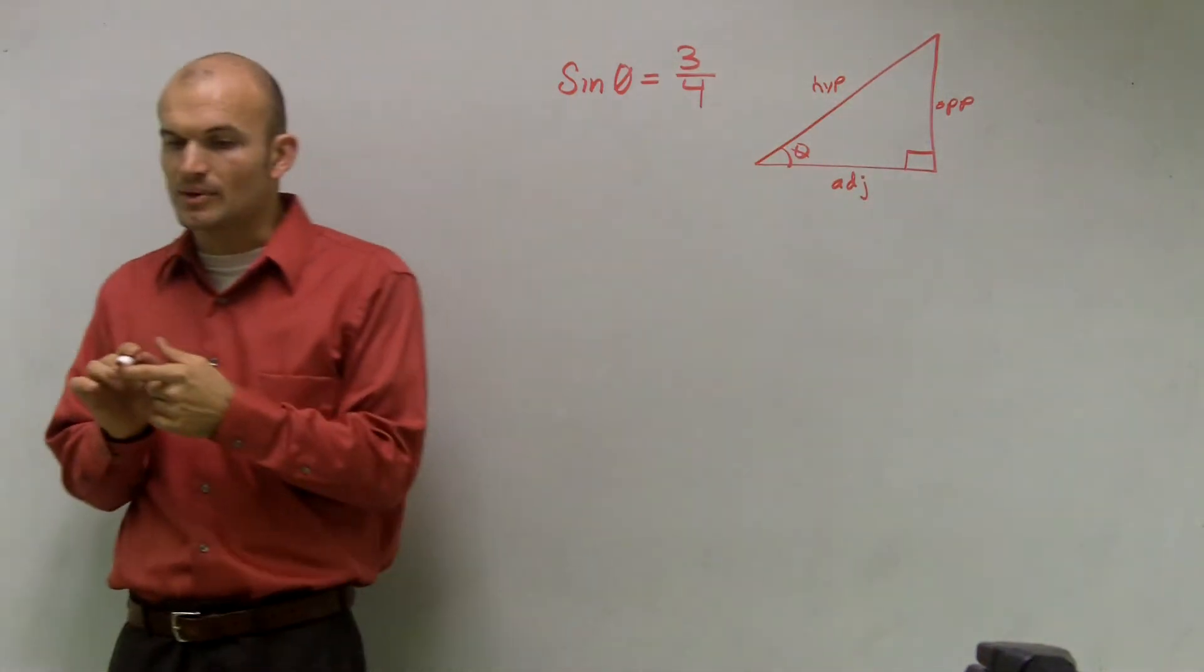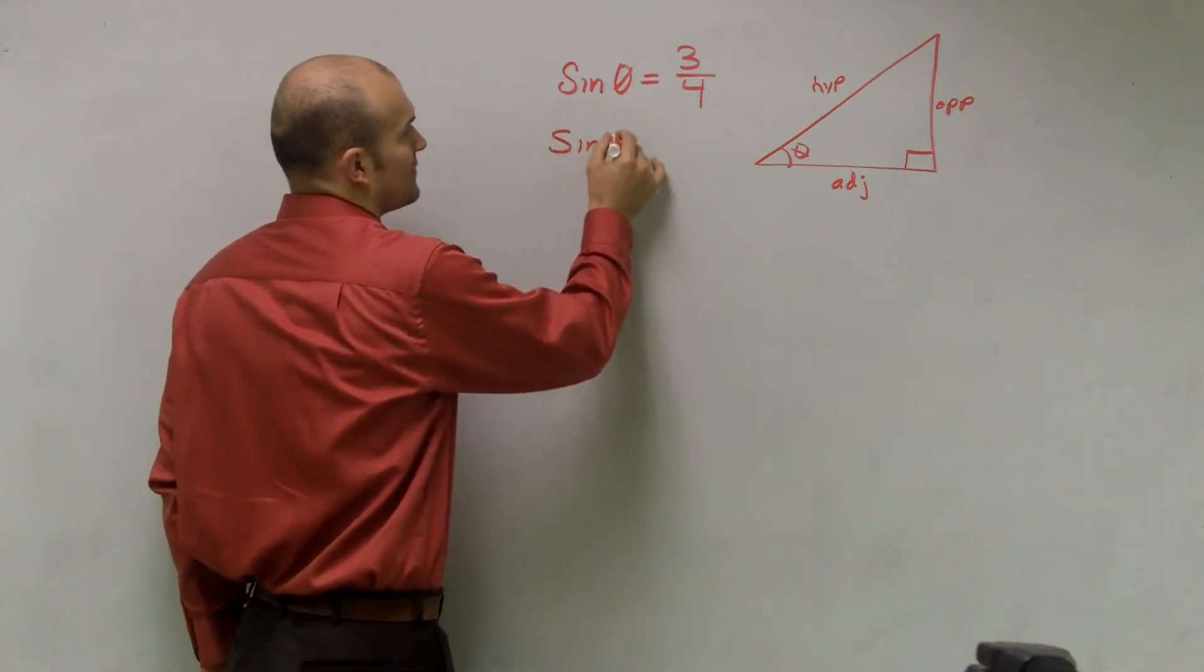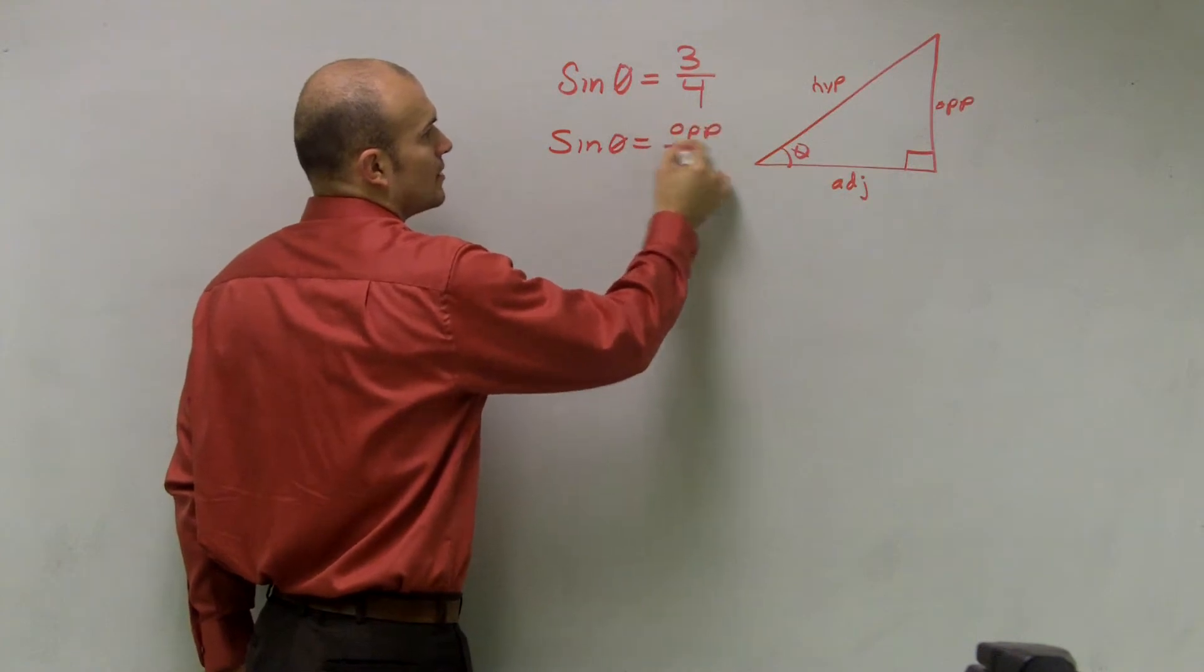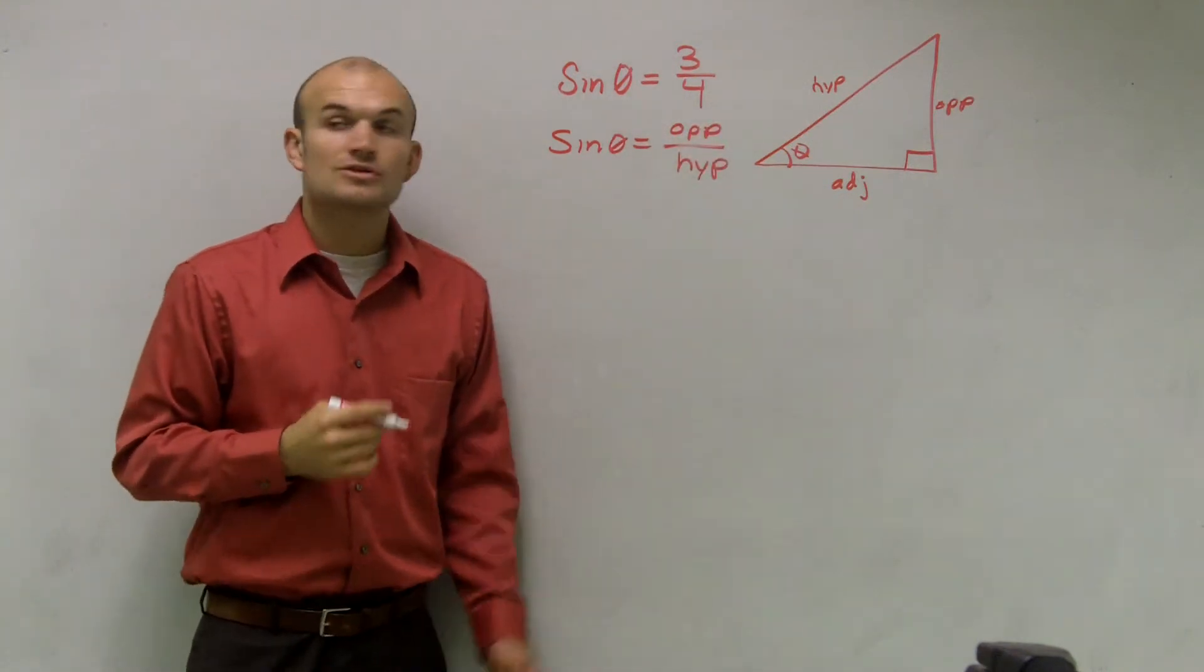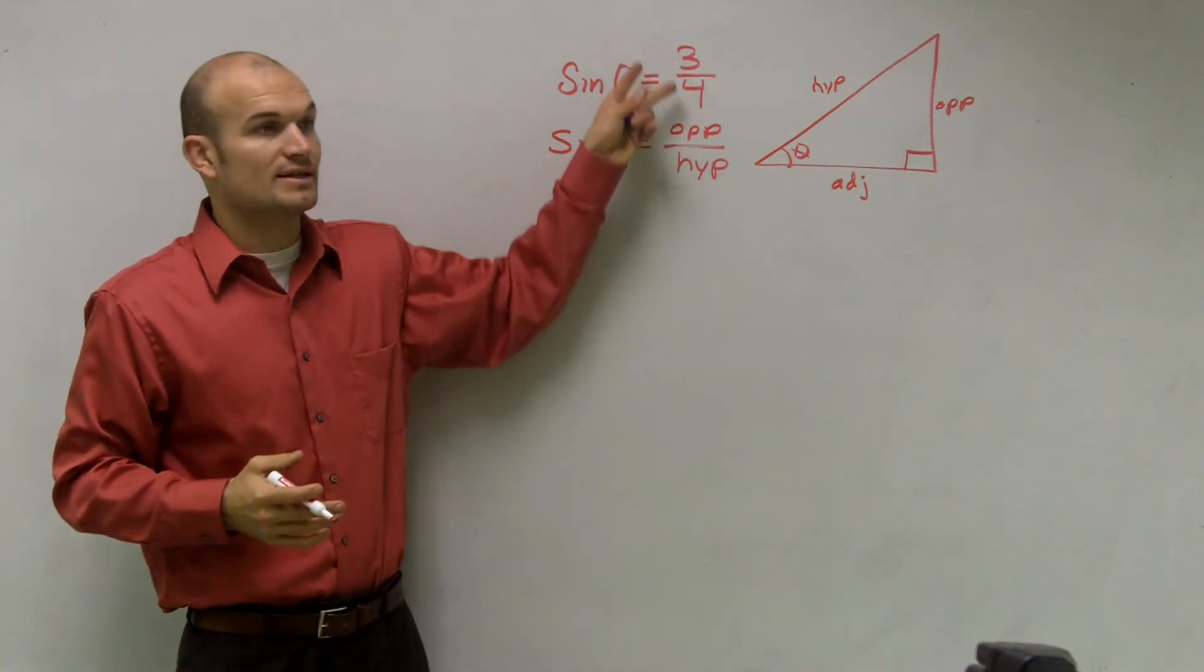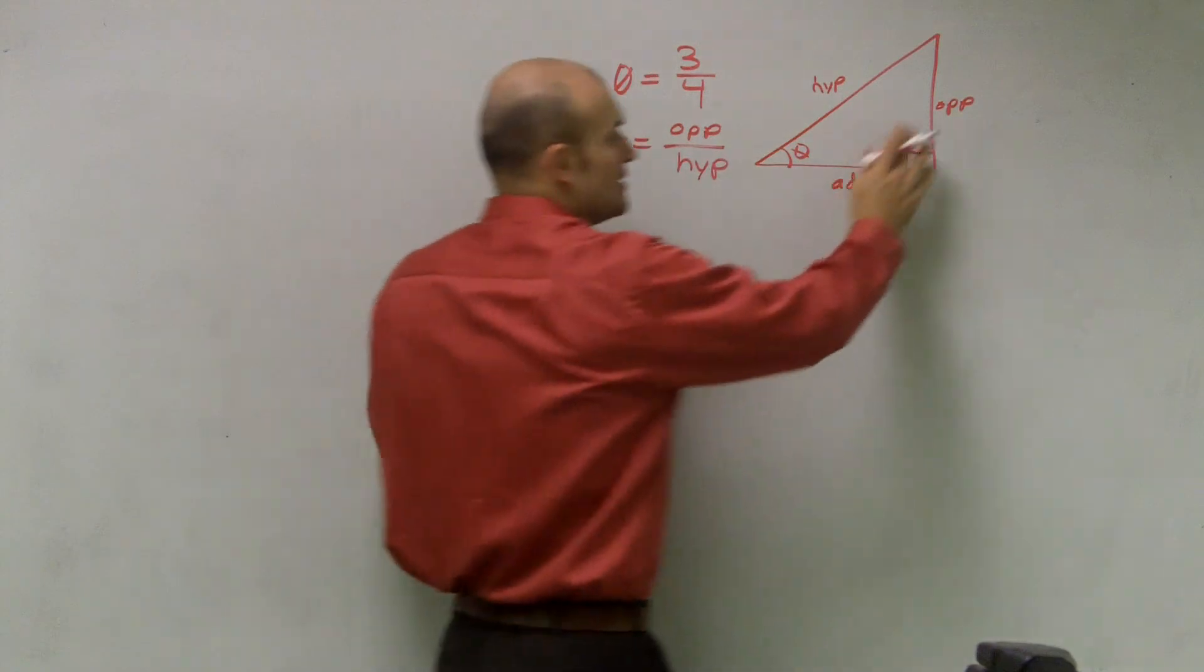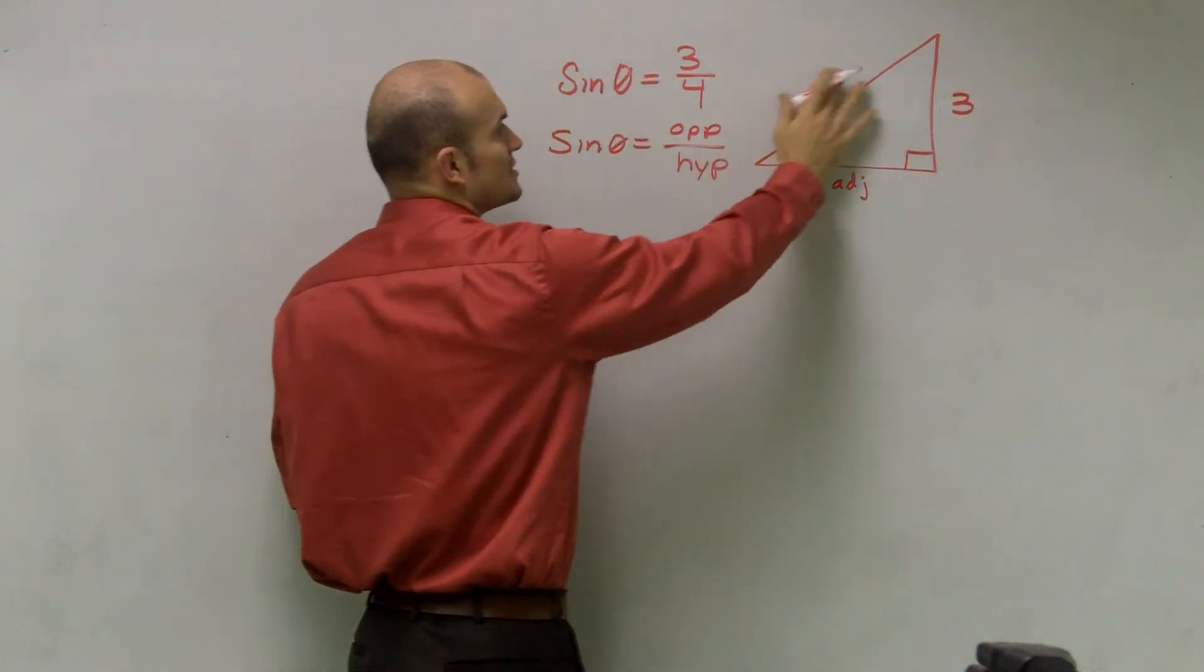Now, remembering what we talked about a couple of classes ago, sine of theta represents your opposite over your hypotenuse, correct? So therefore, what I'm going to do is plug in these values into my triangle. So my opposite, I know, is three, and my hypotenuse is four.